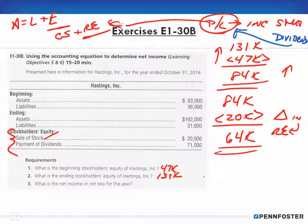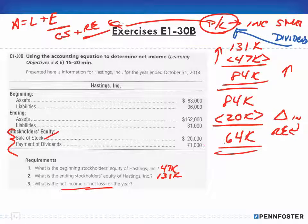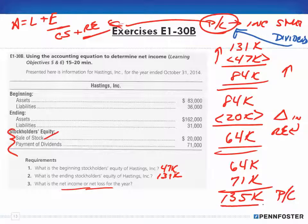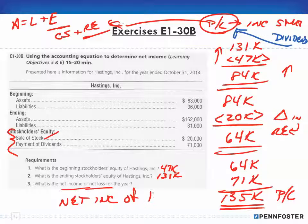We're looking for the net income or net loss. That $64,000 might be the retained earnings change, but I also have to consider that when I closed out my profit or loss from the income statement, I paid out dividends. Since dividends were subtracted out, I have to add back in the $71,000 in dividends in order to figure out what my profit or loss is. So I end up with $135,000 as my profit — a net income of $135,000.